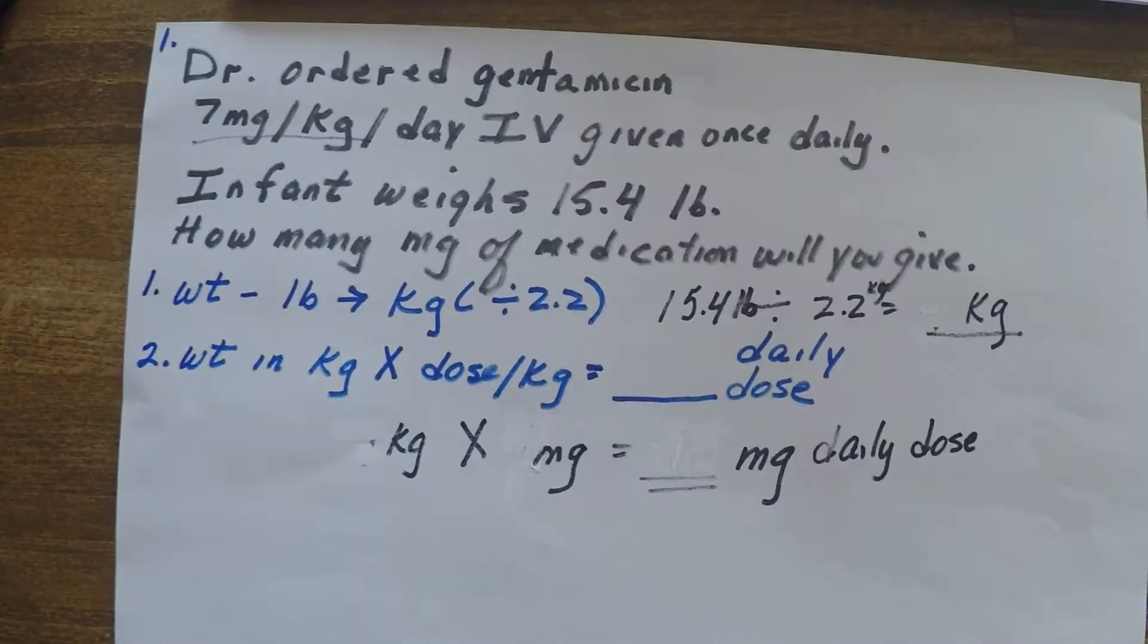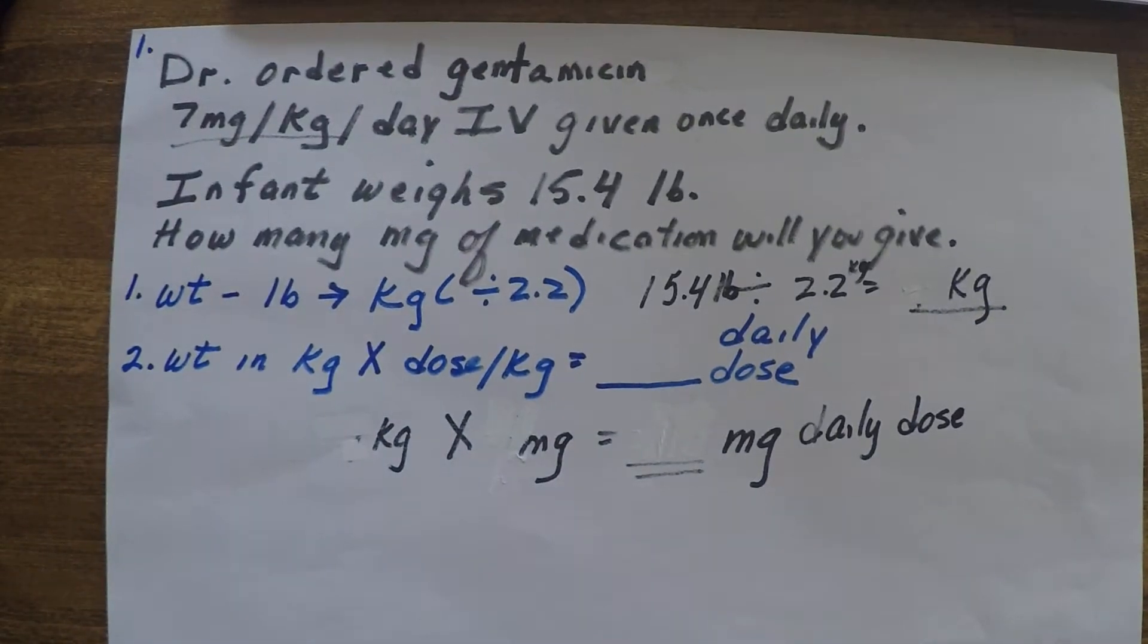So let's do a couple of these. The first one is the physician's order: gentamicin 7 milligrams per kilogram per day IV, and it's given once daily. The infant weighs 15.4 pounds. How many milligrams of medication will you give?